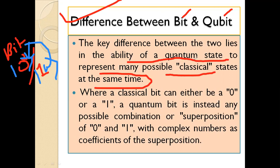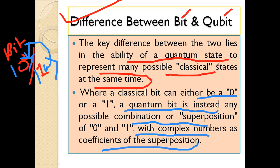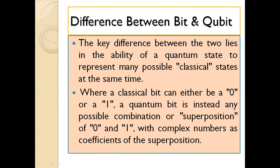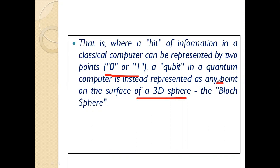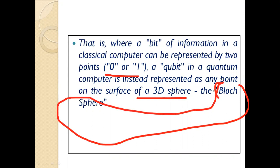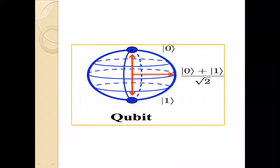The key difference between the two lies in the ability of a quantum state to represent many possible classical states at the same time. A classical bit can be either zero or one, whereas a quantum bit can be in any possible combination or superposition of zero and one, with complex numbers alpha-one and alpha-two as coefficients satisfying alpha-one squared plus alpha-two squared equals one. While a bit can be represented by two points (zero or one), a qubit is represented as any point on the surface of a sphere — known as the Bloch sphere.